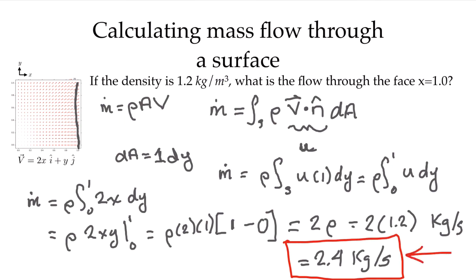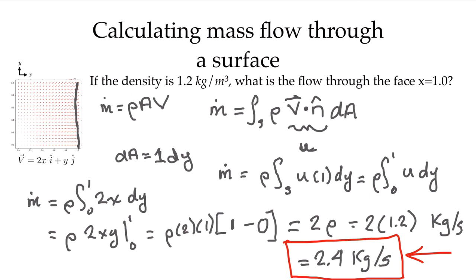It's worth noting that we didn't actually have to go through this integration in this case — it was a very simple case, but I wanted to show you how to do the integration. Looking at the velocity field 2xi, when we put x equal to 1 on this surface, the velocity is just 2 — there's no variation whatsoever. So we could have simply said: density times area times 2, where the area is 1 unit in y times 1 unit into the screen, giving us 2.4 kilograms per second directly. That's how we calculate the mass flow rate through a surface.